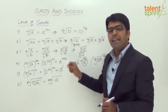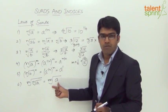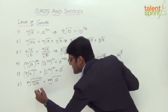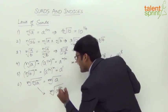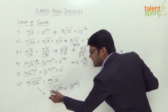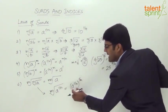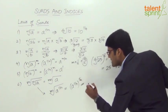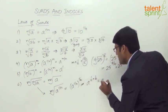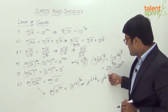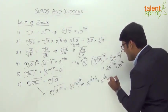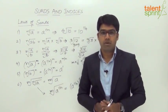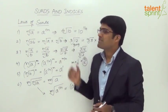Rule number six: the m-th root of the n-th root of a equals the mn-th root of a. Here's how: the m-th root of the n-th root of a can be written as the m-th root of a to the power of 1 by n. Taking the m-th root as a power of 1 by m, this becomes a to the power of 1 by n, whole to the power of 1 by m. From the laws of indices, multiplying the powers gives a to the power of 1 by n times 1 by m, which equals a to the power of 1 by mn. And a to the power of 1 by mn is the mn-th root of a. These are the key rules of surds and indices to remember and apply intelligently to simplify such questions much faster.